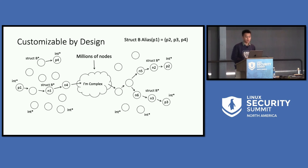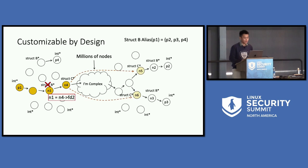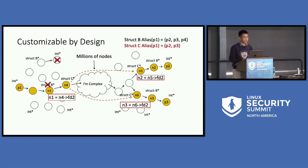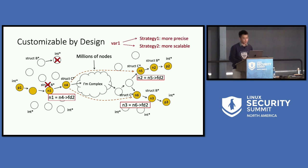There is actually a more precise strategy. This time, we won't choose to take the shortcut at n1. Instead, we keep tracking the dataflow. When at n4, which is a struct C pointer, we can choose to take the shortcut by struct C and potentially get a more precise result. One reason for greater precision is that struct C is less commonly used than struct B, so taking the struct C shortcut goes to fewer nodes — meaning it's more precise. In the extreme case, if we don't take any shortcuts, the analysis falls back to a purely dataflow-based analysis. This shows that UniS is not a simple alias analysis. It's an adjustable and unified framework that allows different dataflow and type strategies to achieve different trade-offs in precision and scalability.